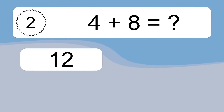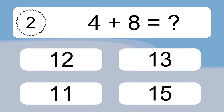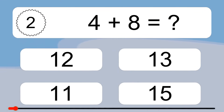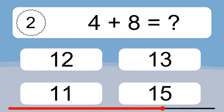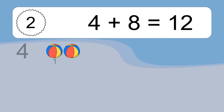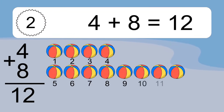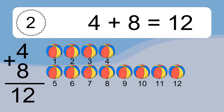4 plus 8 equals what? 4 plus 8 equals 12. Let's count it. 1, 2, 3, 4, 5, 6, 7, 8, 9, 10, 11, 12.